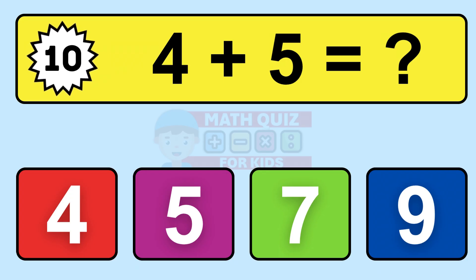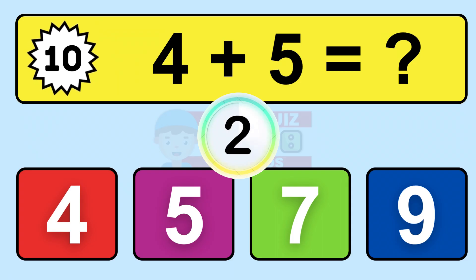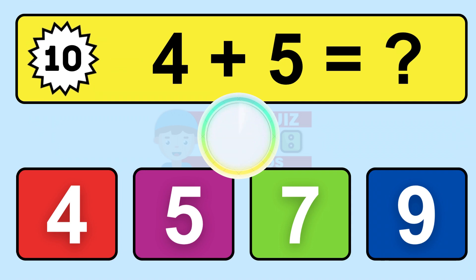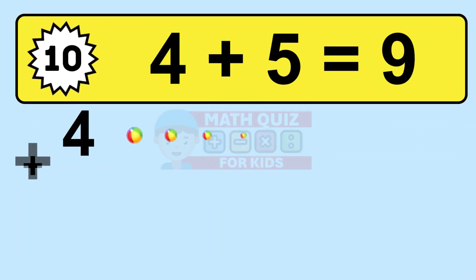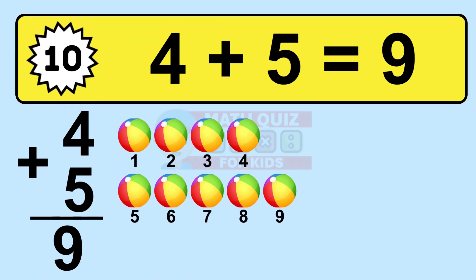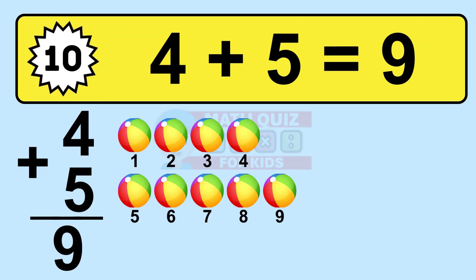Question ten: 4 plus 5 equals what? So the answer is 4 plus 5 is 9. Let's count it. 1, 2, 3, 4, 5, 6, 7, 8, 9.